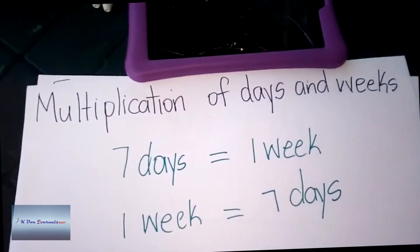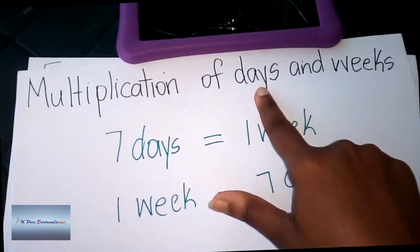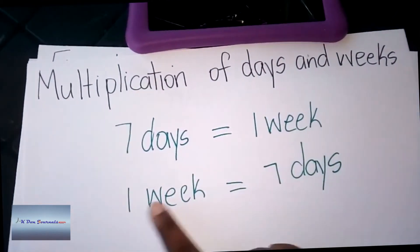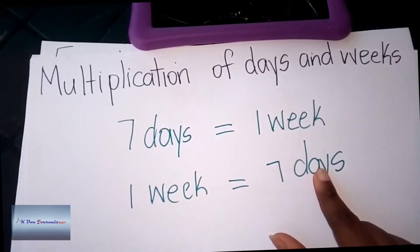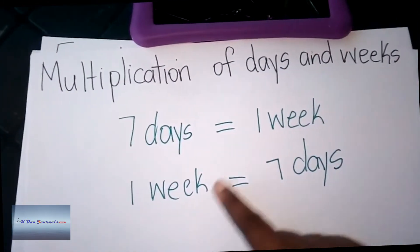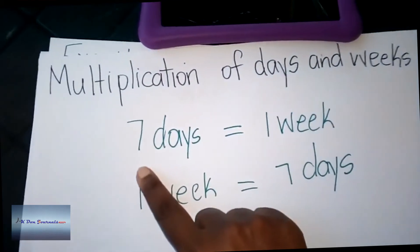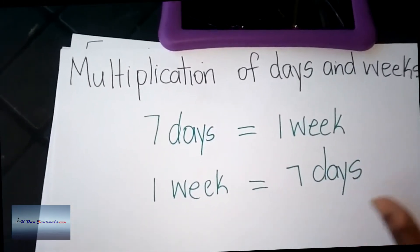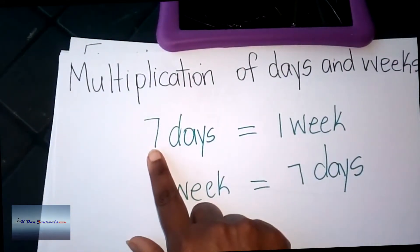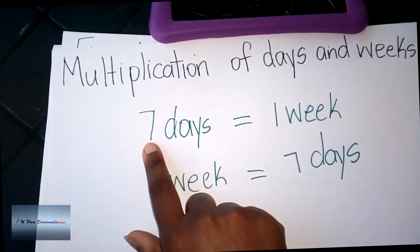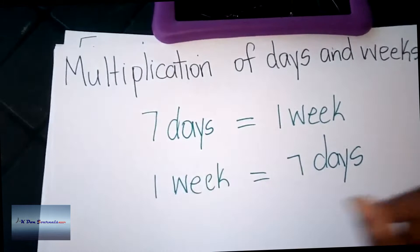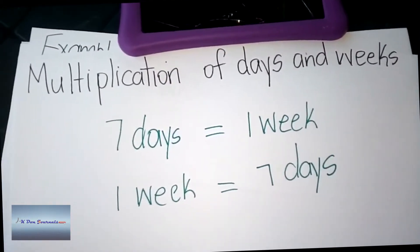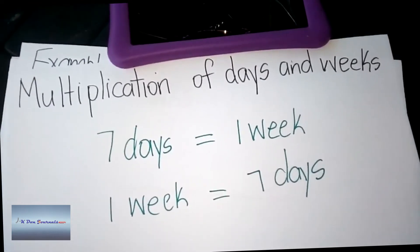Hello boys and girls, we are going to be looking at multiplication of days and weeks. Remember, seven days equal one week, and one week equals seven days. This means that to get one whole week you must have seven days. So if I say I have two weeks, I multiply 7 by 2 to give me 14 — there are 14 days in two weeks.